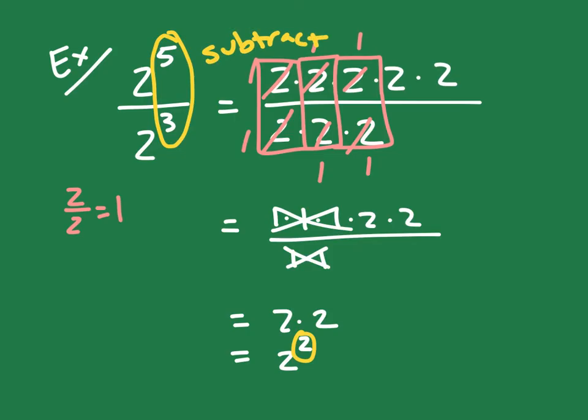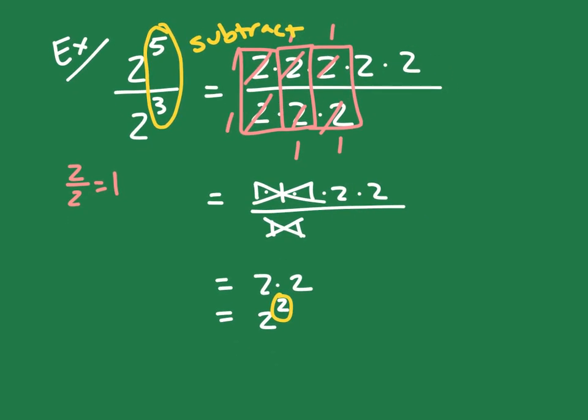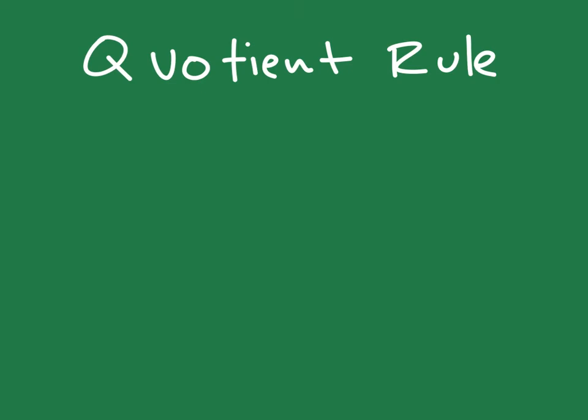So you subtract your exponents. So instead of expanding all that out, if you had 2 to the 5th over 2 cubed, if you know that you just take 2 to the 5 minus 3 power and you operate in your exponents, then you can just get 2 squared. So let's come up with a rule for this. So we would call this the quotient rule. I'm going to use the same variables of a to the m over a to the n power. And if you wanted to simplify this and write it as one number raised to an exponent, you would just simply subtract your exponents. That's how you obtain the product and quotient rule.